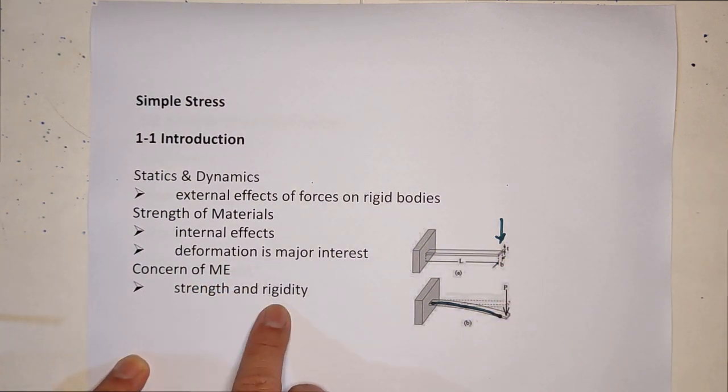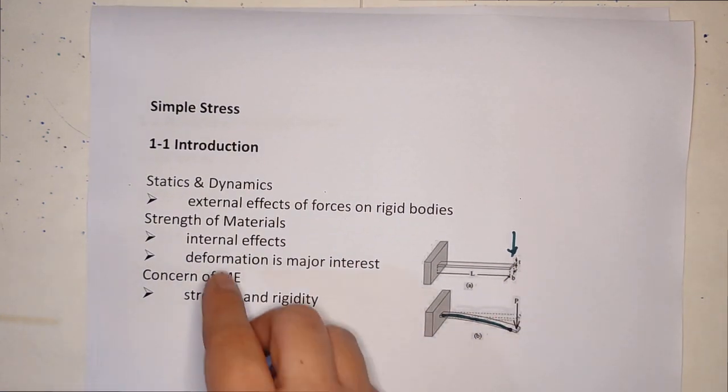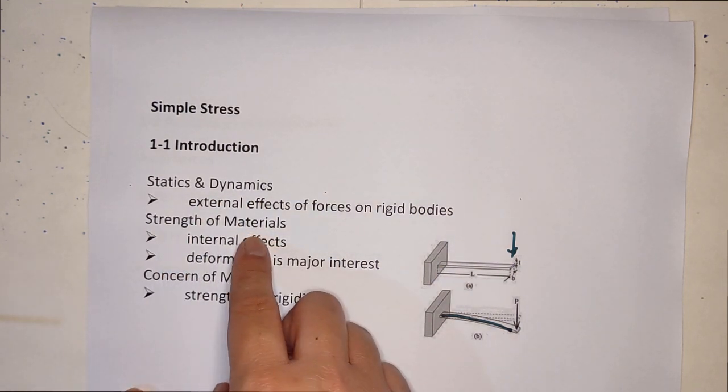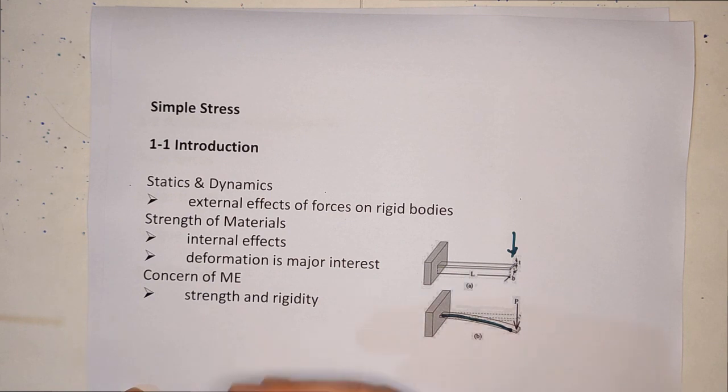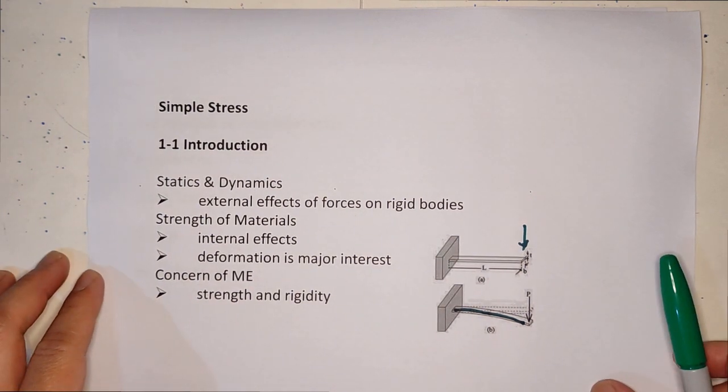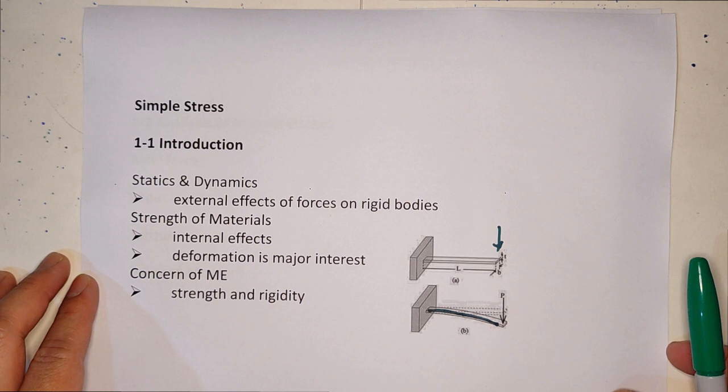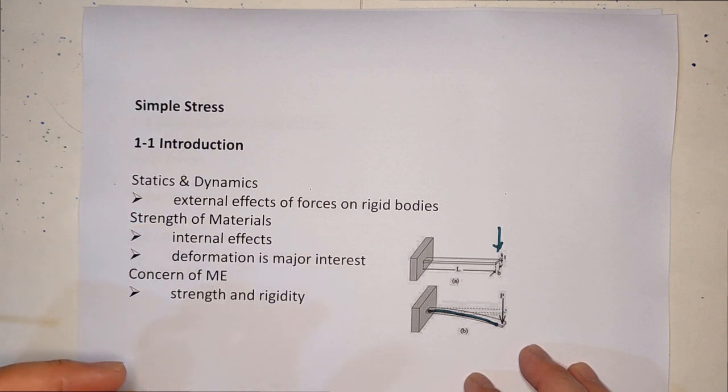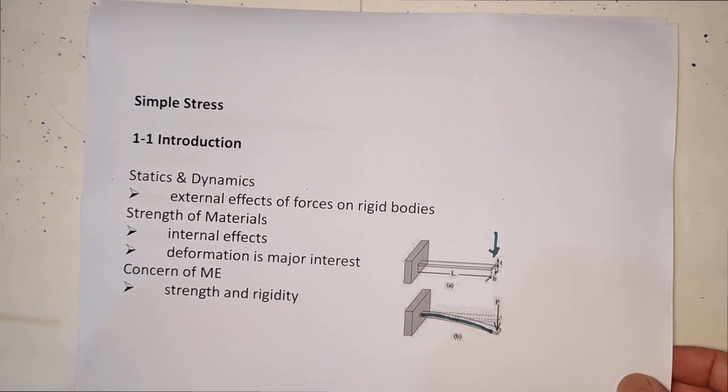The concern for ME is the strength and rigidity. So step by step, it started with the statics and dynamics, then we go up with the strength of materials where we are now concerned with the deformation, then later on we are now concerned on the design. That's another subject - machine design one and machine design two. But you must be familiar with statics and strength to go to machine design.